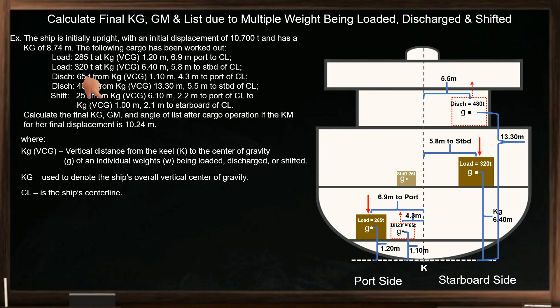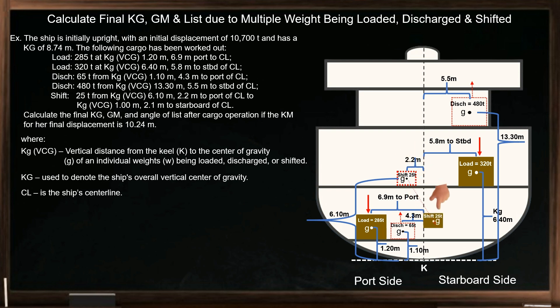Next, shift 25 tons of weight from the tween deck at kg 6.10 meters and 2.2 meters port of the centerline, to the lower hold at kg 1 meter and 2.1 meters starboard of the centerline. So these are the cargos that have been worked out in this scenario.